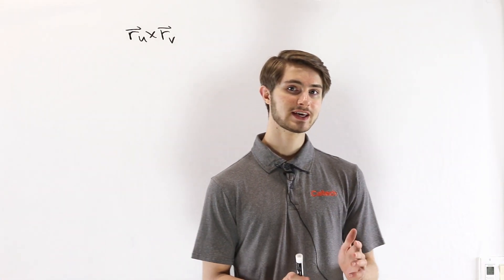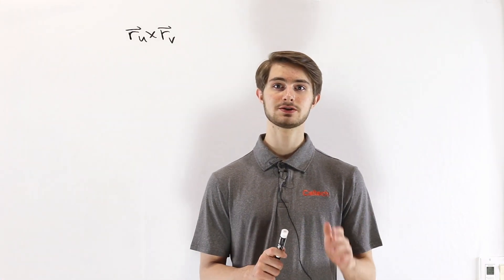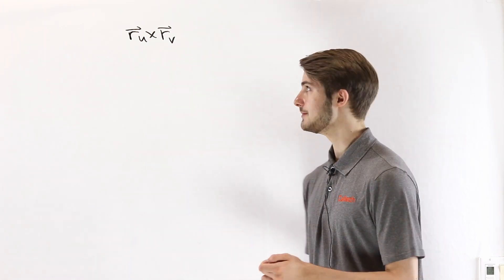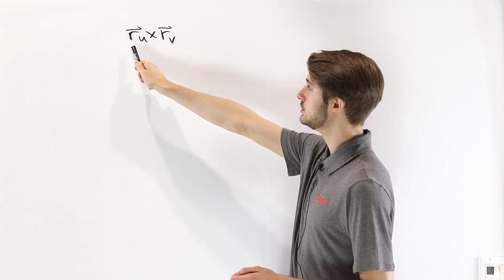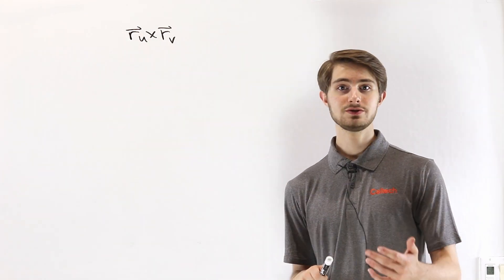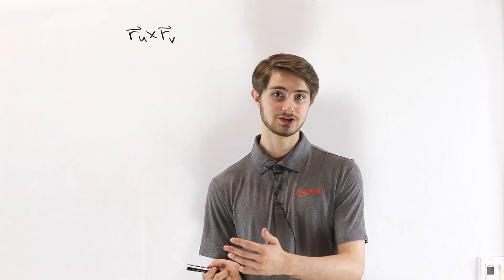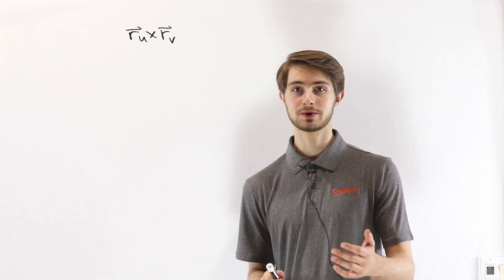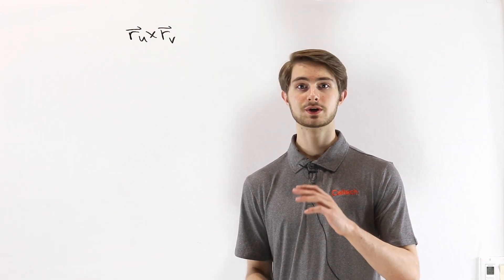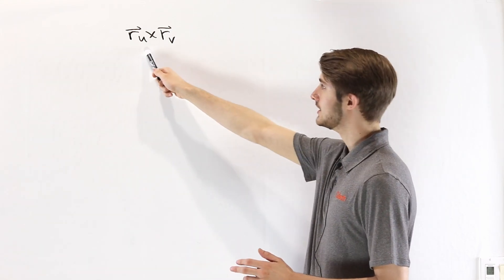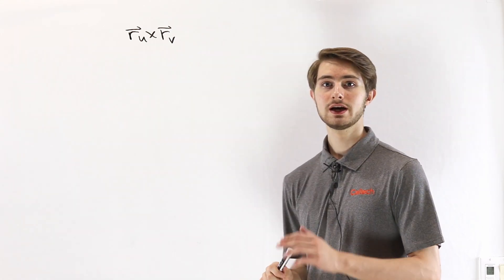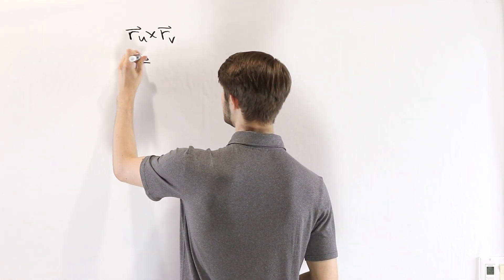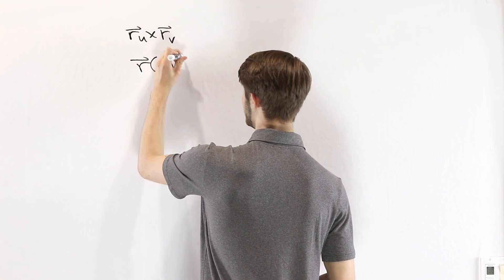We are going to talk about some special cases of surface integrals that allow us to simplify our calculations. When we're looking at a surface, we can describe it using a vector-valued function r of two variables u and v. To calculate the surface integral, the cross product r_u cross r_v is a very important part of getting to our final answer. We're going to talk about a few ways to shortcut this cross product, specifically when our two variables of the parametrization are x and y.